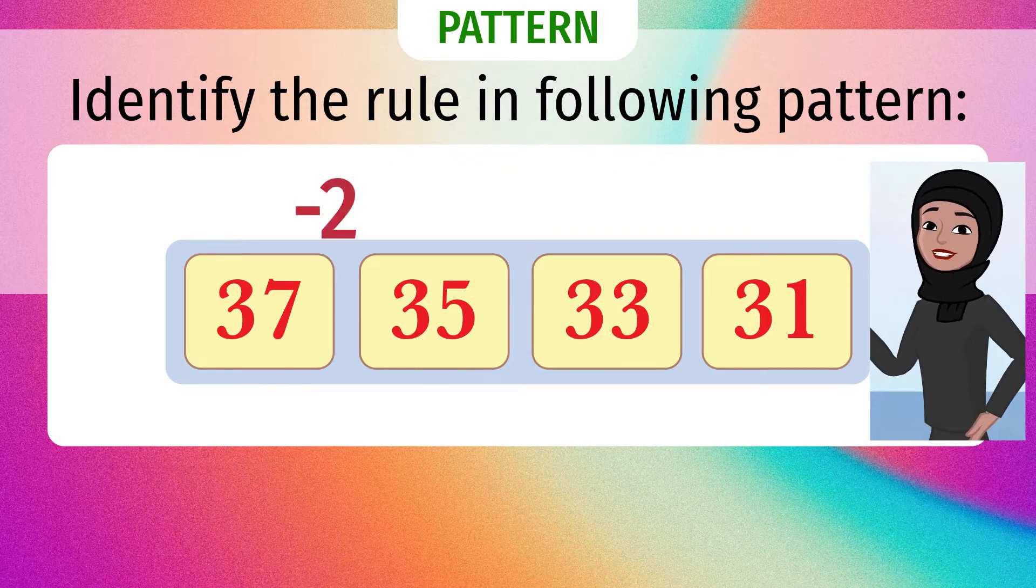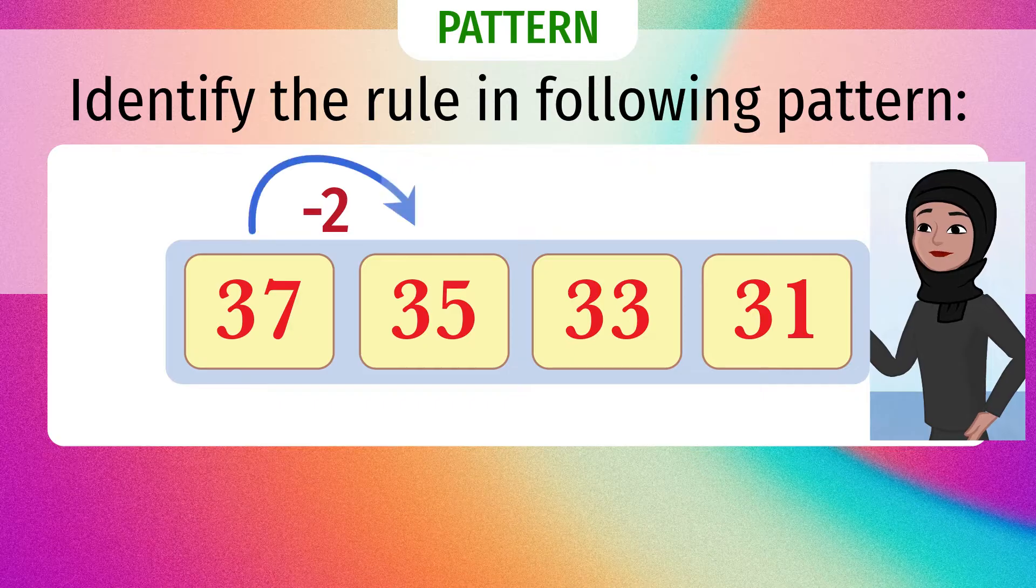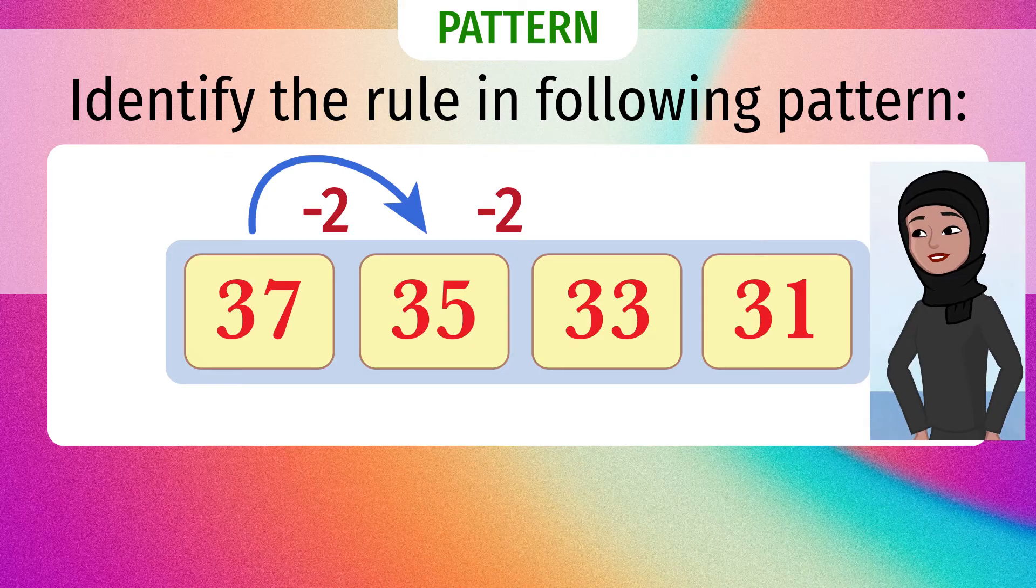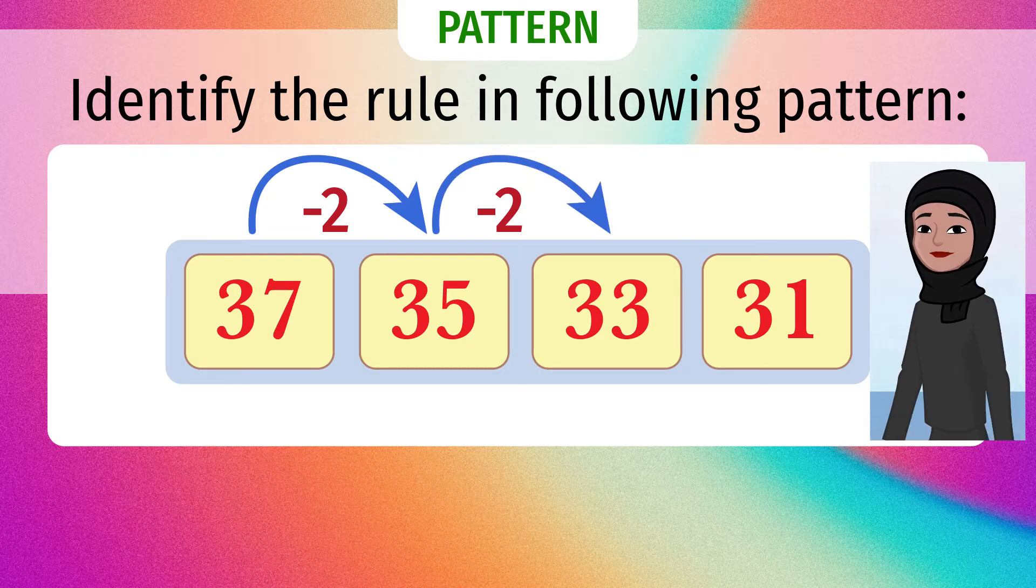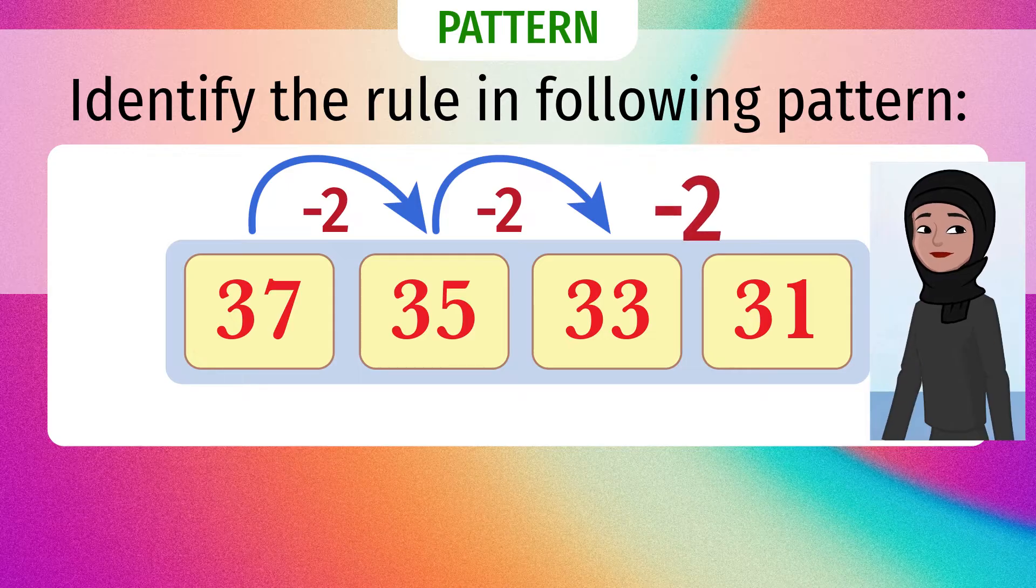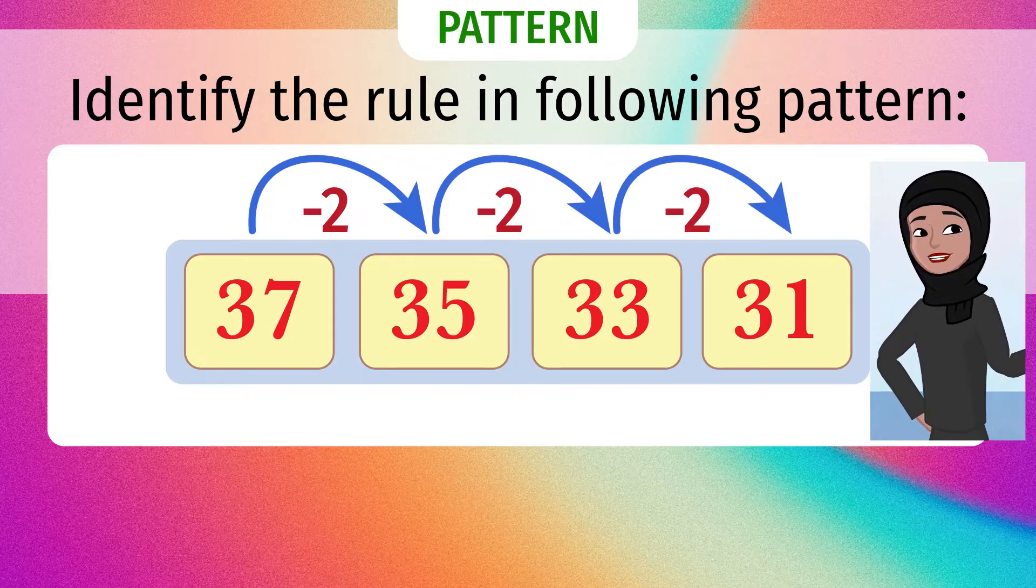37 minus 2 is 35. Observe the decreasing order of numbers. 35 minus 2 is 33. A rule has to be the same across the series. 33 minus 2 is 31.